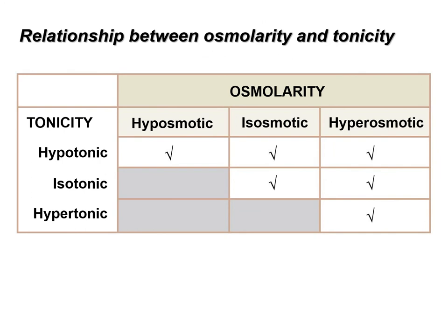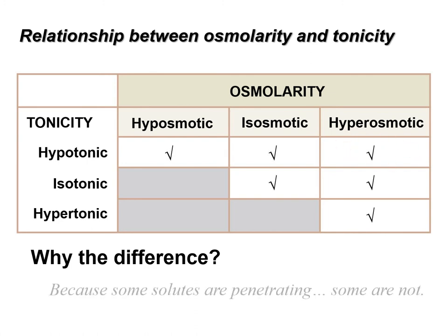I've tried to come up with a way to present this through this format. We may end up doing it in class anyway during our synchronous sessions. The question here is: why do we have the ability to be hypotonic, which causes the cell to swell and burst, even though the solution is hyperosmotic? That's because some solutes are penetrating and will diffuse down their concentration gradients, thus altering which solutes are where and where the water goes.